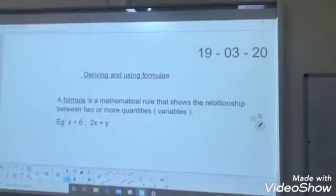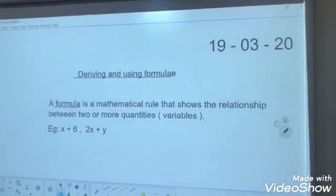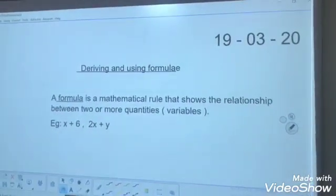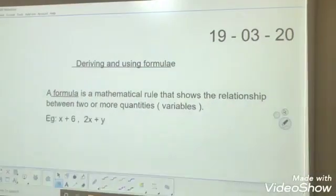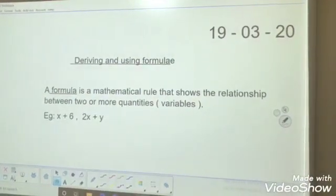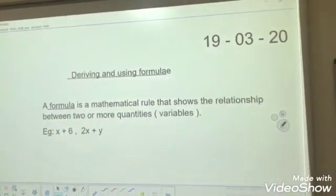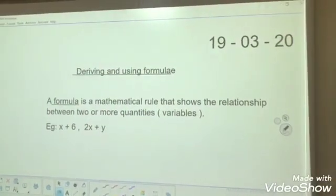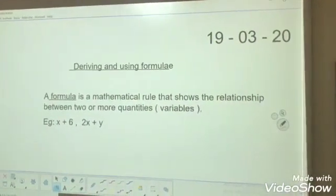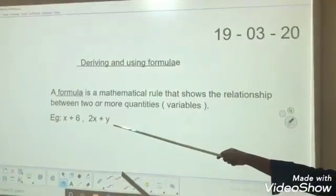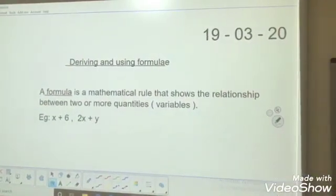Today, we are going to learn about deriving and using formulas. What do you mean by formula? A formula is a mathematical rule that shows the relationship between two or more quantities or variables. Variables, as you know, are alphabets like x, y, anything. Variable means it can vary, it can change. So here I have given one example for formula: that is x plus 6, 2x plus y.